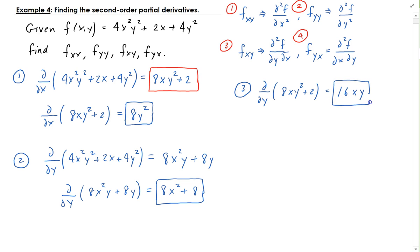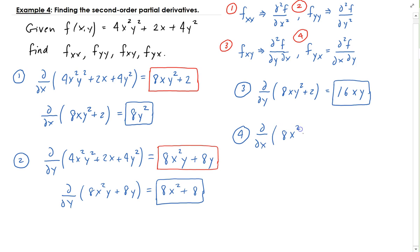So ∂²f/∂y∂x = 16xy. For number four, we take the partial of f with respect to y first, which is 8x²y + 8y, and then take the partial of that with respect to x. Treating y as a constant, this gives us 16xy, and the derivative of 8y with respect to x is zero. So ∂²f/∂x∂y = 16xy as well.